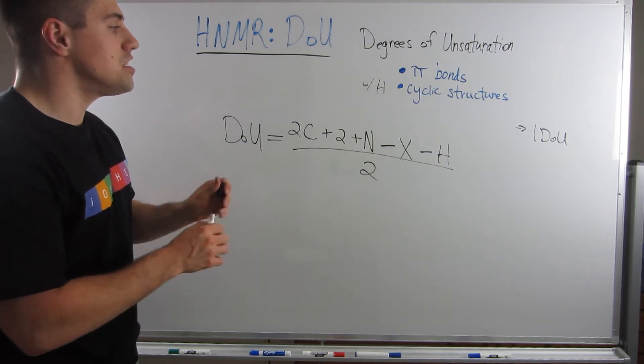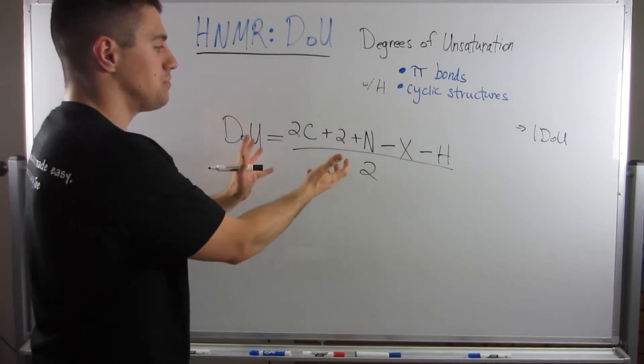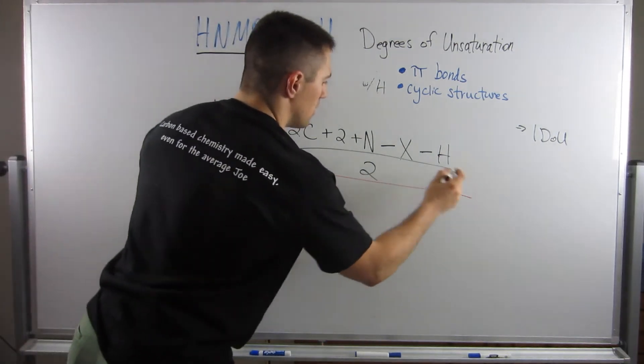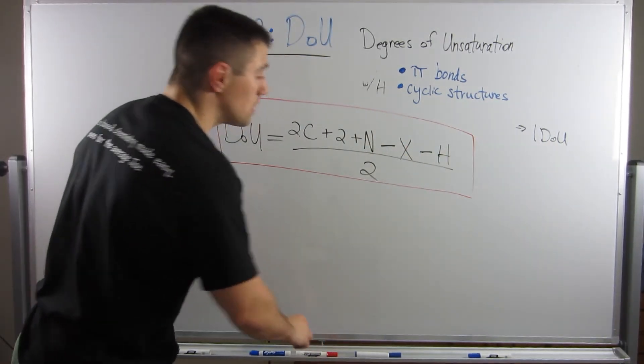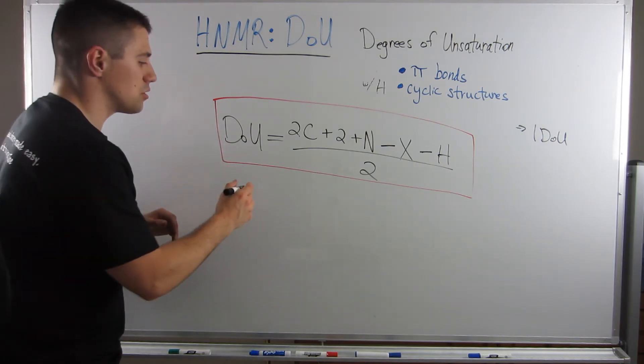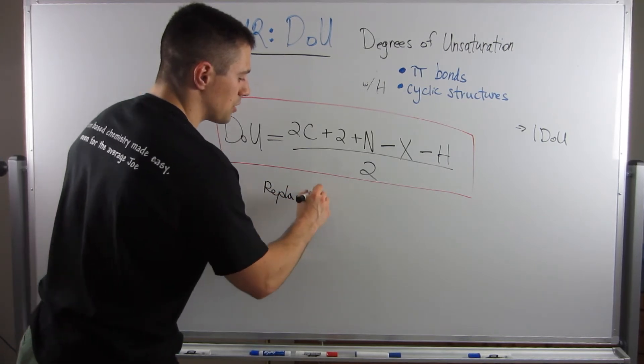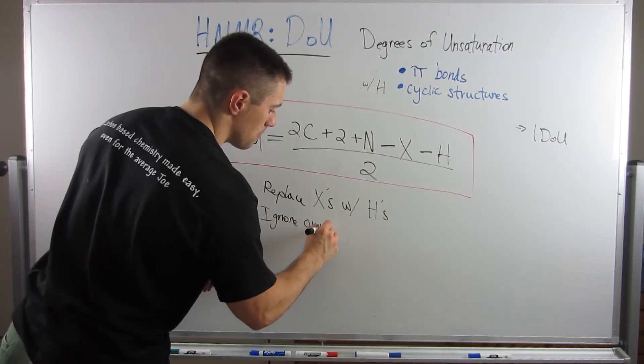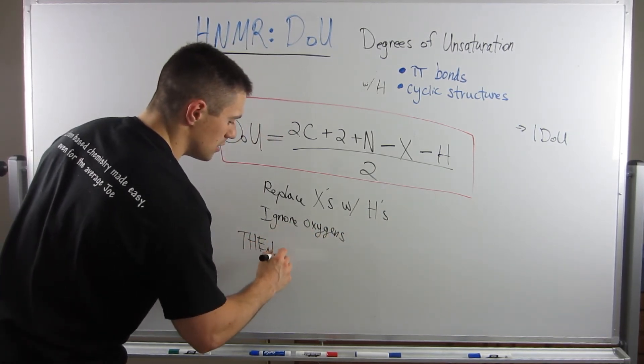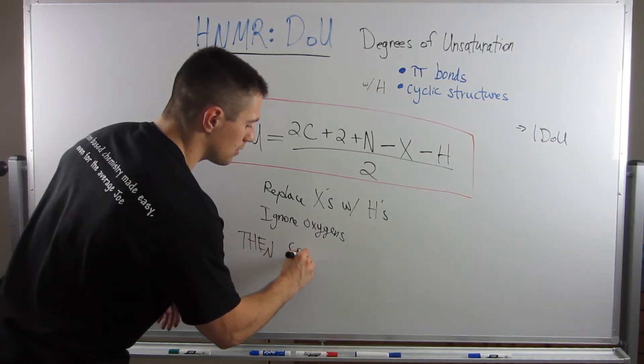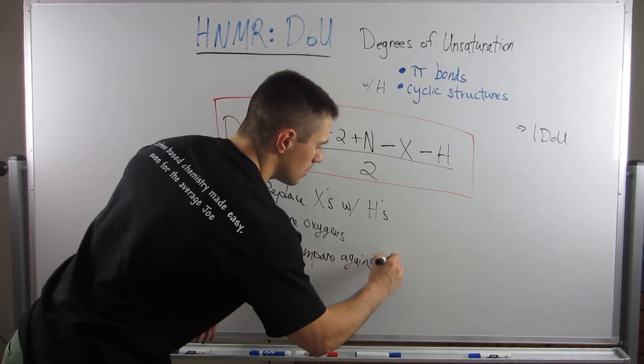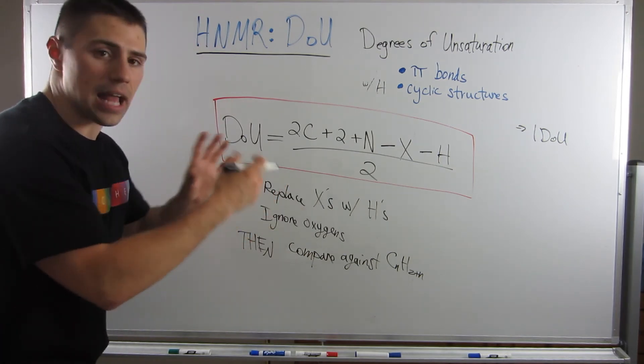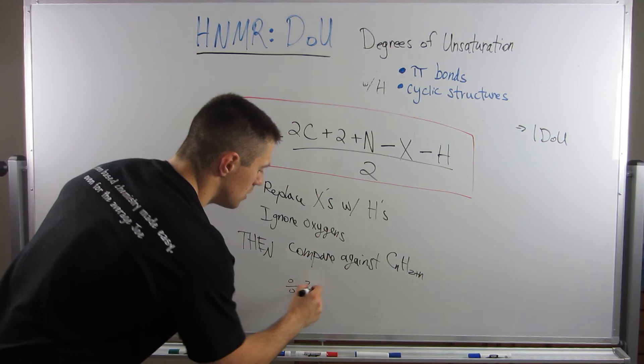So degrees of unsaturation, double the number of carbons plus just a regular 2, plus the number of nitrogens minus the number of halogens minus the number of hydrogens divided by 2. So if you really think about this, this is a lot of the things that we've been in this equation has all the logic that we talked about. You can memorize this, this is helpful when nitrogens, I always freeze whenever I have to do an NMR question with nitrogen, because it's a little kooky, but this works like a charm. Otherwise, the two things you will need to know starting out are just replace your halogens with hydrogens, ignore oxygens, then compare your formula with the number of carbons, what you should be at 2N plus 2, compare against this, that'll tell you, and then take that number of hydrogens, divide that by 2, that'll tell you your degrees of unsaturation.